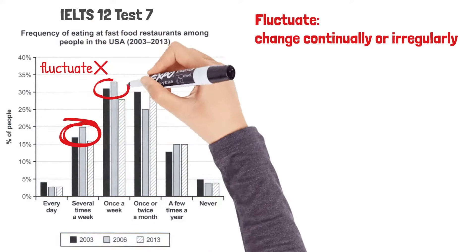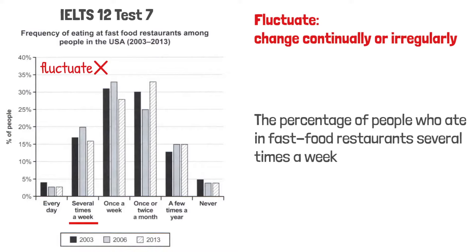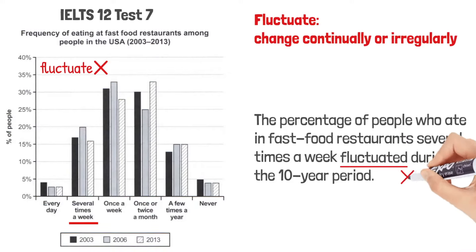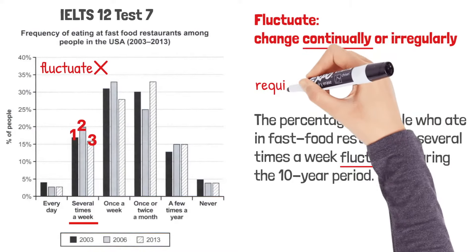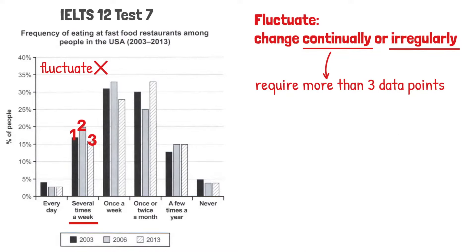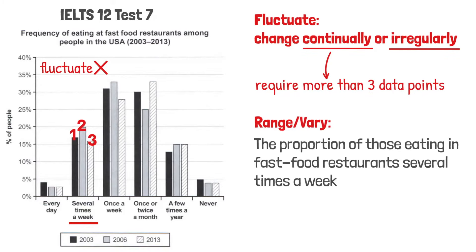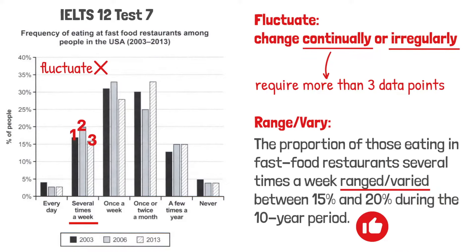However, we shouldn't use fluctuate to describe these three categories in this chart. For example, don't say that the percentage of people who ate in fast food restaurants several times a week fluctuated during the 10-year period. First of all, there are only three data points — to fluctuate means to change continually, so it would require more than three data points. Apart from that, the number didn't change irregularly. So what verb should we use? We can use 'range' or 'vary': the proportion ranged or varied between 15 and 20%.